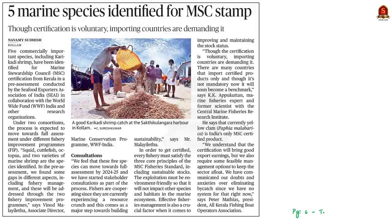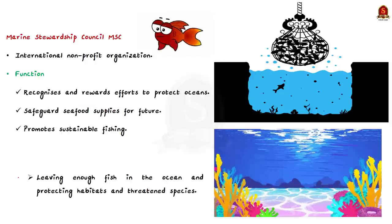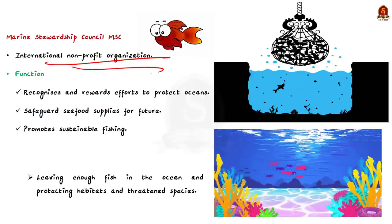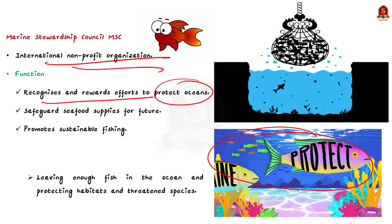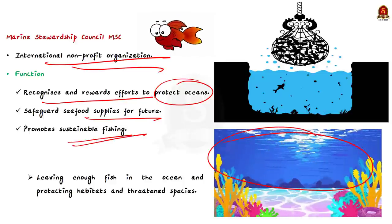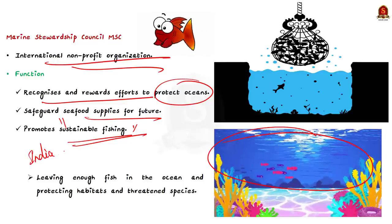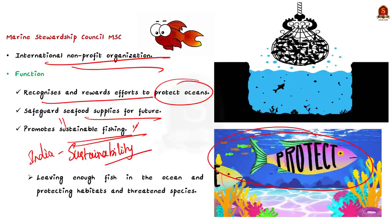Now let's move to the next article. Five commercially important species are identified for Marine Stewardship Council certification. The assessment was conducted by the Seafood Exporters Association of India in collaboration with the WWF India and other research organizations. The species identified are squid, cuttlefish, octopus, and two varieties of marine shrimp. The Marine Stewardship Council is an international non-profit organization that recognizes and rewards efforts to protect oceans and safeguard seafood supplies for the future, and promotes sustainable fishing.